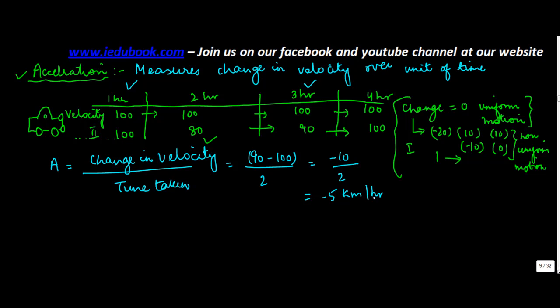If suppose this distance was in kilometers. And sometimes this is also referred to as A is equal to v minus u upon t, where u is the initial velocity, v is the final velocity, and t is the time.